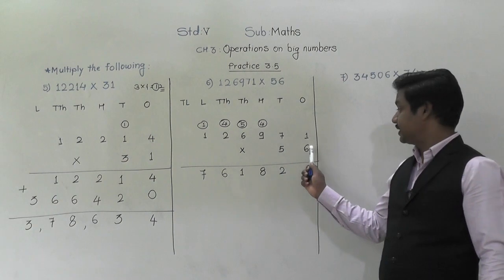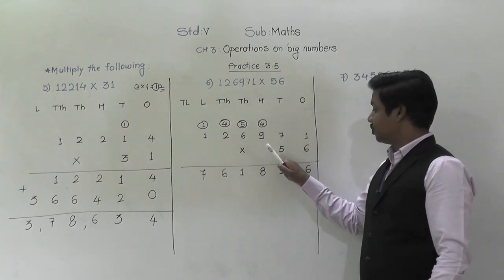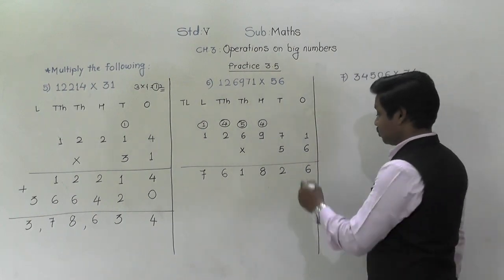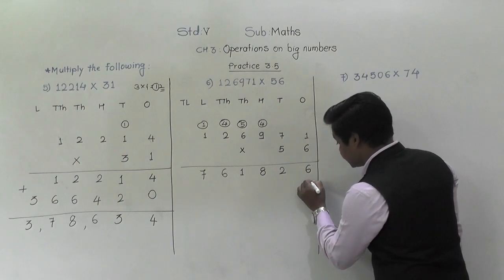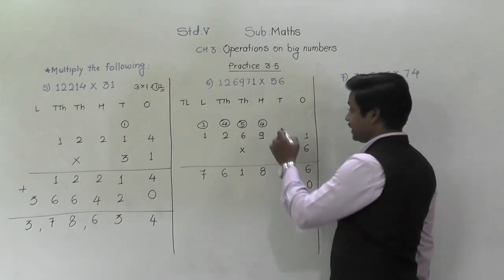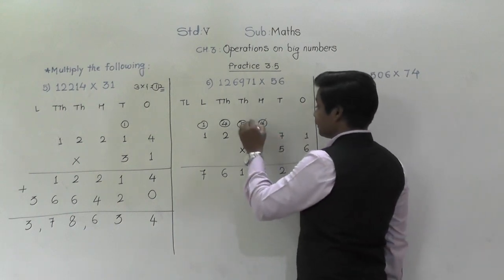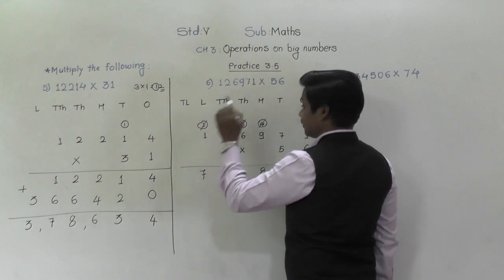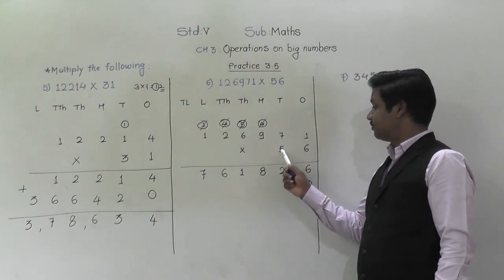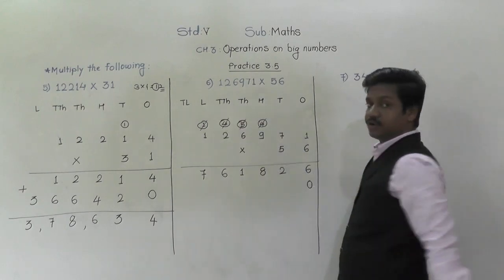Six twos are twelve. Twelve plus four is sixteen — six will come down, one will be carried. And six ones are six. Six plus one is seven. So we have multiplied by the ones place digit. Now we are going to multiply by the tens place digit. Before multiplying by the tens place digit, two things you have to do: put zero at ones place, and cut the carry over taken during multiplication by ones place.